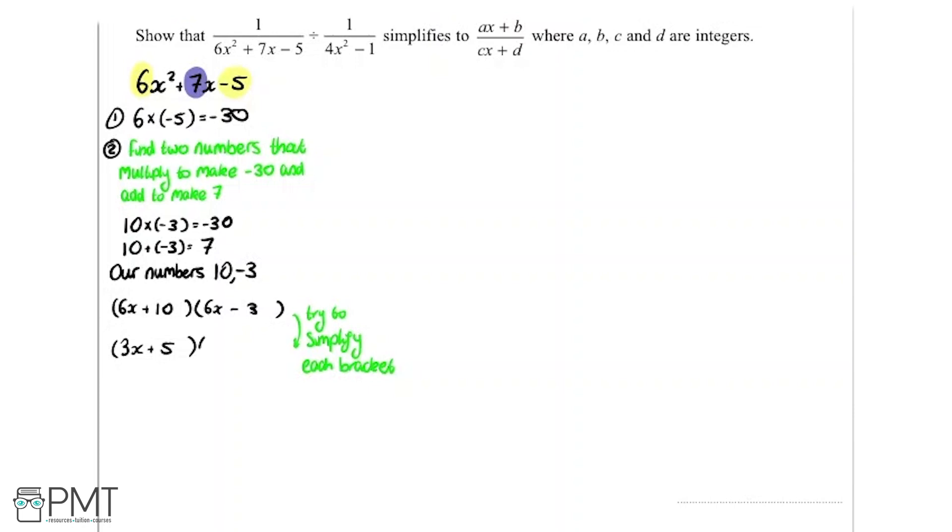Now we're going to do that with the other bracket here. And I can see I can divide both by 3. So I'm left with 2x and minus 1 here. And that there is the fully factorized form.